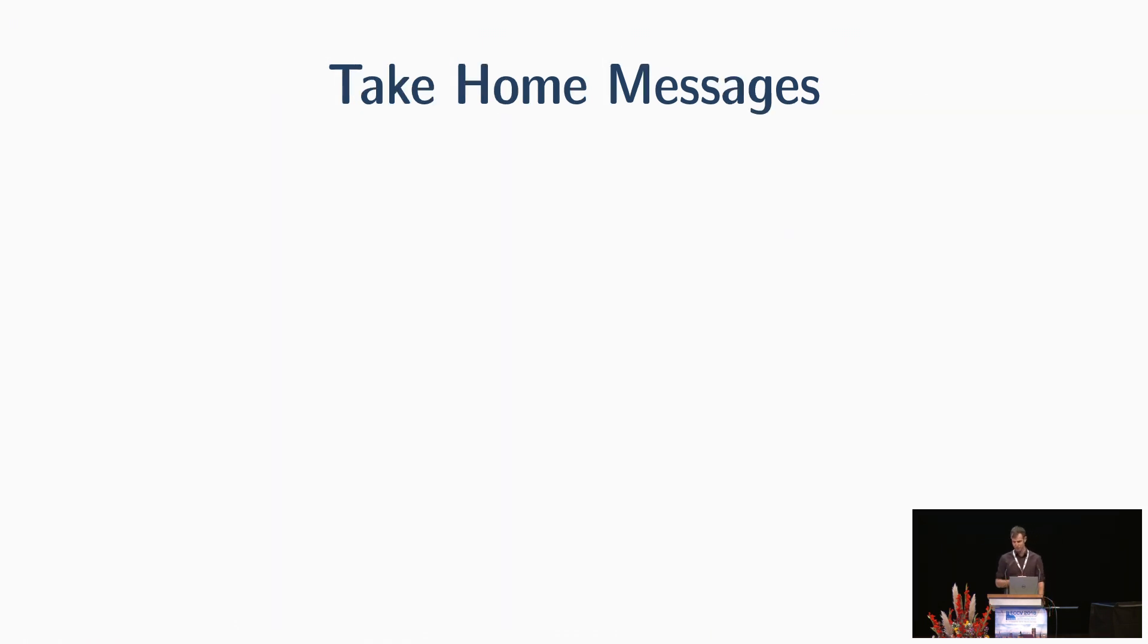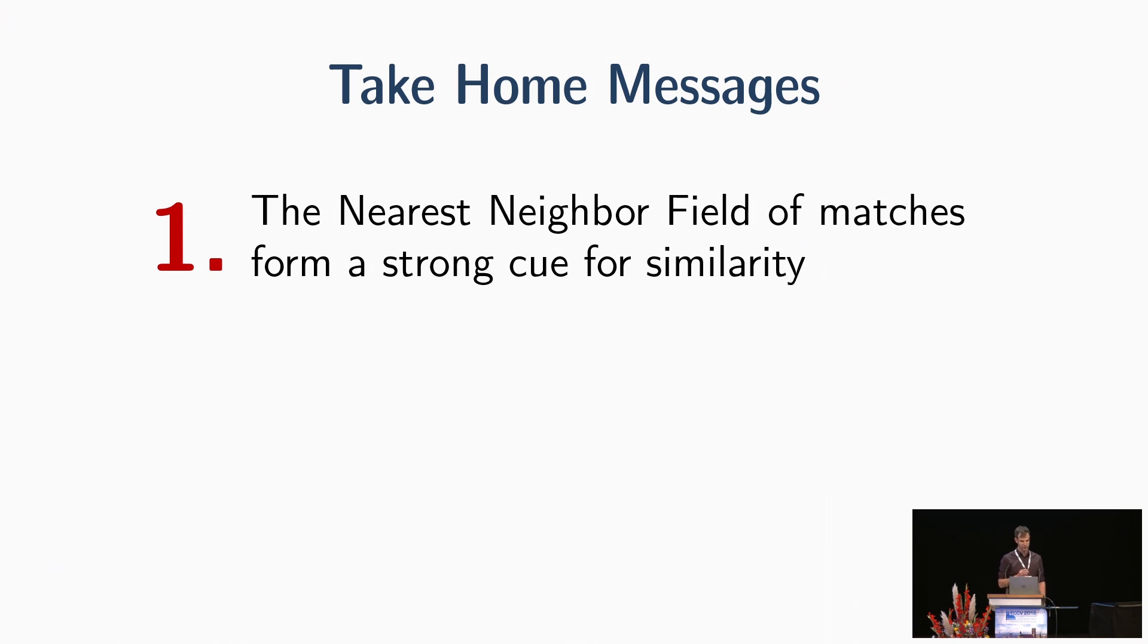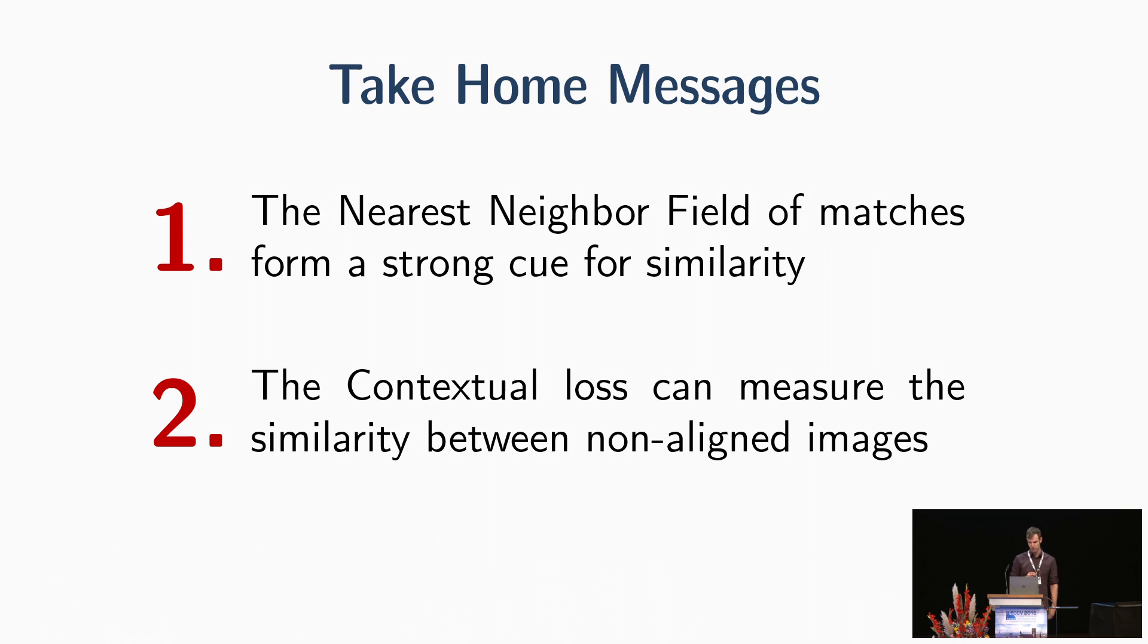Two take-home messages. First, the nearest neighbor field of matches form a strong cue for similarity. And the second one is that the contextual loss I just described can measure the similarity between two non-aligned images. Thank you.